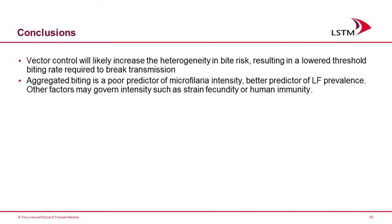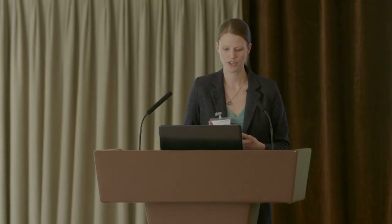To conclude: vector control will likely increase the heterogeneity in bite risk in a community, which would result in a lowered threshold biting rate required to break transmission. Maybe that's not a problem because the ultimate goal is to reduce those biting rates, but we need to be aware if the interventions we're distributing are also going to lower that threshold — we'd like to know what that threshold is and ensure we're able to reach it. The next step is to take these village-specific values for microfilaria prevalence, biting rates, and the aggregation parameter to model what the timeline for elimination is and whether it differs between villages.